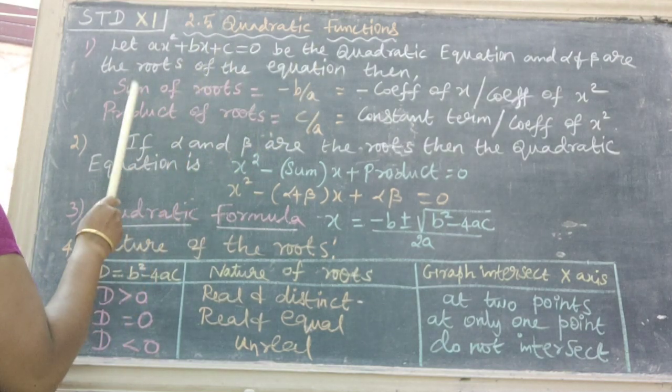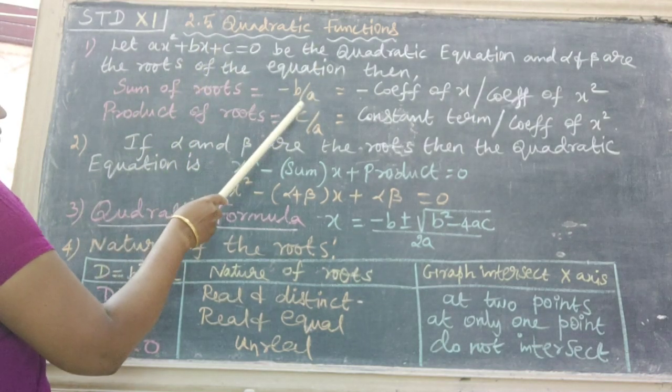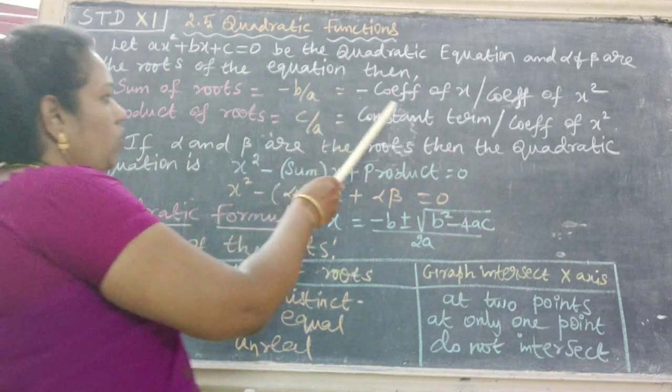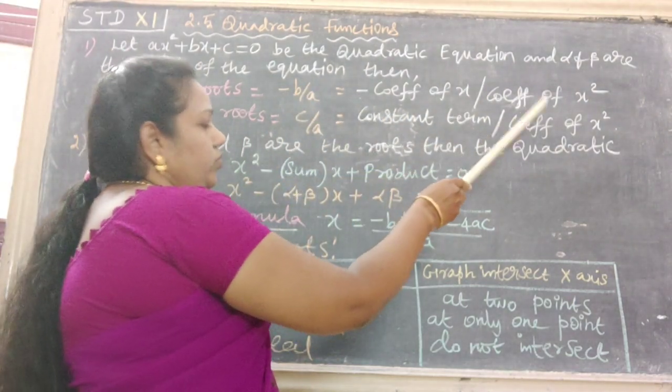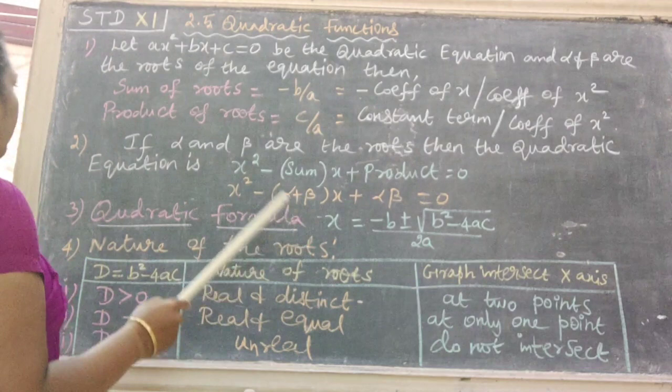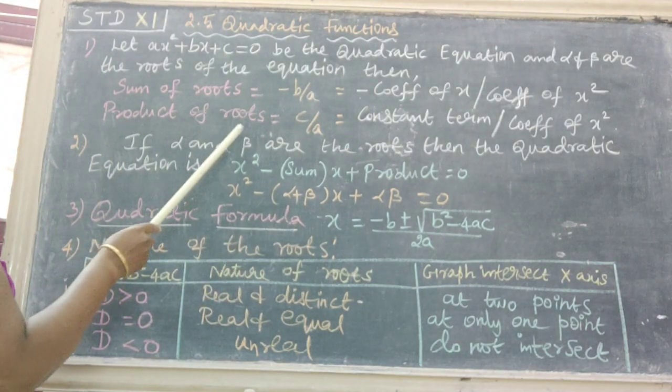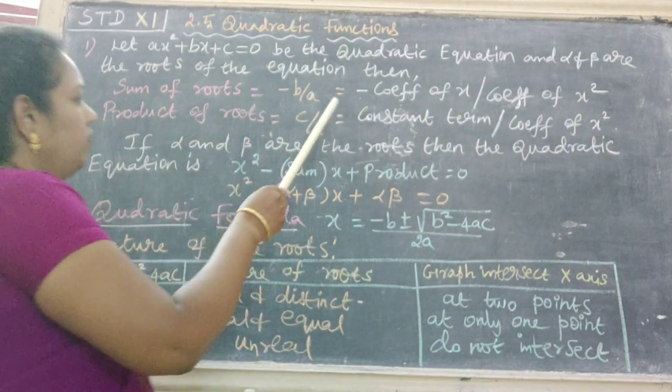Then sum of roots equals -b/a, that is, minus coefficient of x divided by coefficient of x². Next, product of roots equals c/a, which is the constant term divided by coefficient of x².